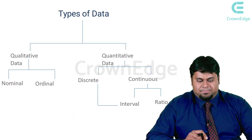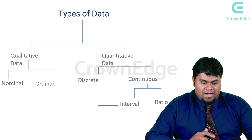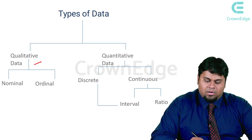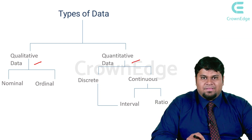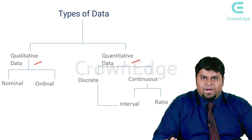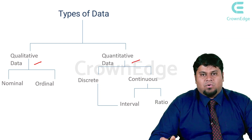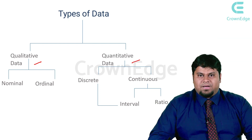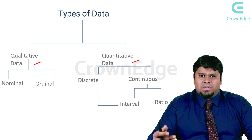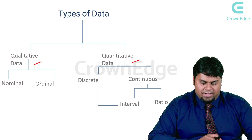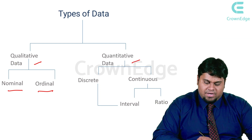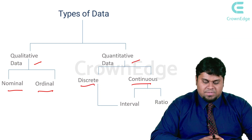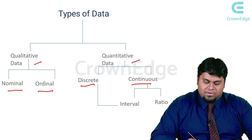Moving on to the types of data: data can be predominantly classified into qualitative data or quantitative data. Quantitative data includes anything that can be added up, such as height and weight. Qualitative data includes quality of life, behavioral practices, oral hygiene behaviors, and knowledge or perceptions. Qualitative data is divided into nominal and ordinal, while quantitative data is divided into discrete and continuous. Continuous data can further follow an interval scale or a ratio scale.